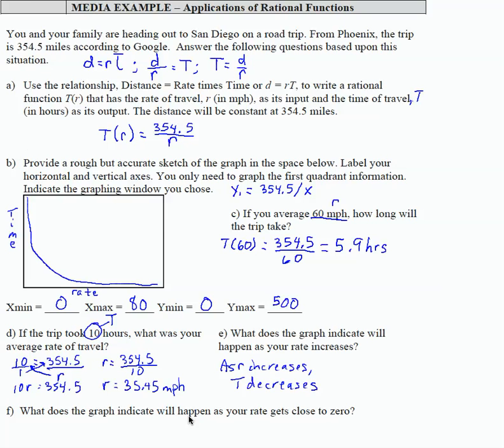And the last, what does the graph indicate will happen as your rate gets close to zero? So if we're slowing down, and our rate is almost zero, what happens is our time increases. So as, say r, we can say r approaches zero, time increases. And again, that makes total sense because the slower you go, the longer it takes.